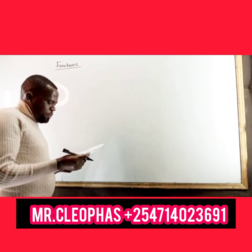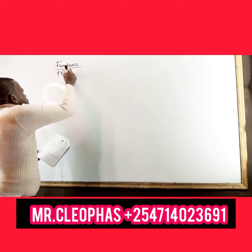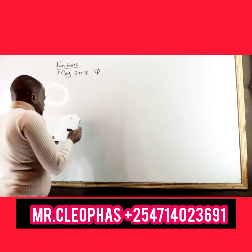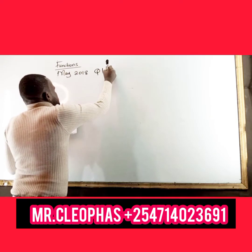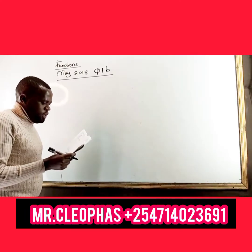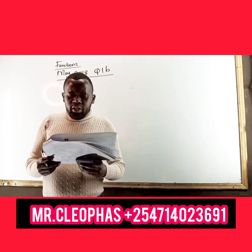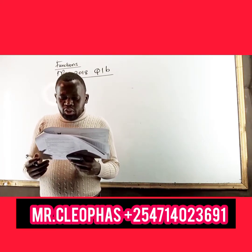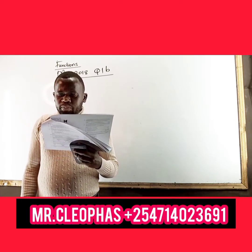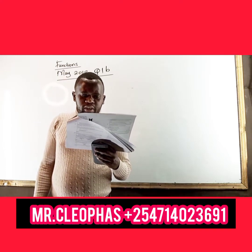I want to do a past paper question, May 2018, question number 1B. I will read the question. It says: the unit price and total cost functions associated with the production and sale of a certain electric component are given by the following equations.